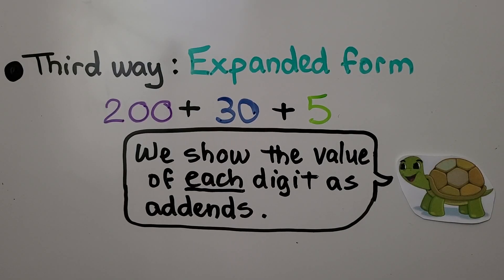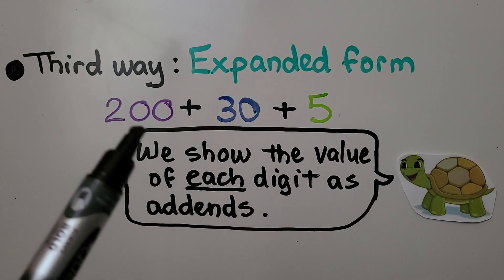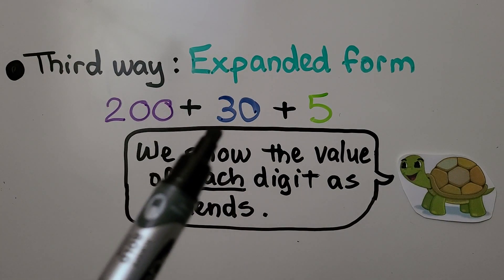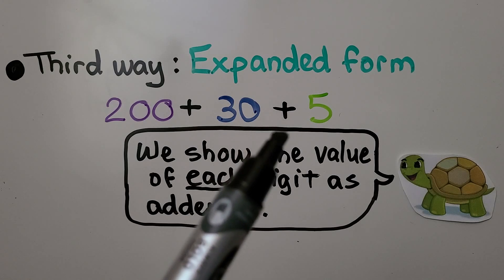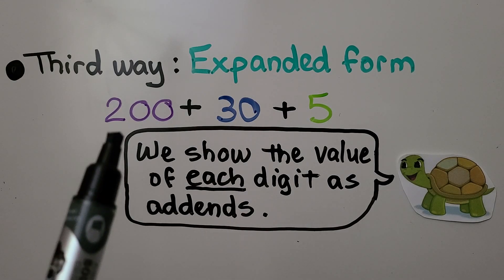A third way is expanded form. We write 200 plus 30 plus 5. We show the value of each digit as addends.